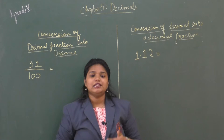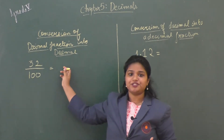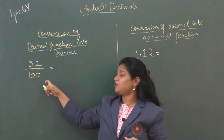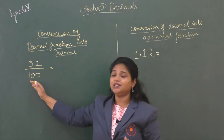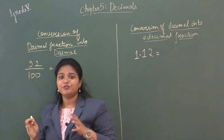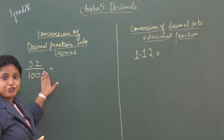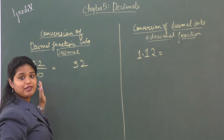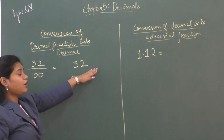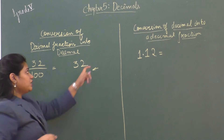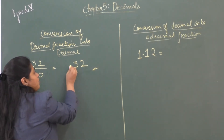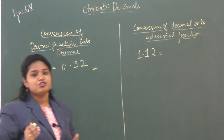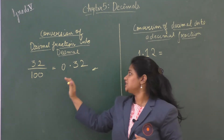Let's look at examples of conversion of a decimal fraction into a decimal number and vice versa. Here we have the decimal fraction 32/100. To convert it: consider the numerator 32, then count the zeros in the denominator — there are two zeros — so count two digits from the right (2, then 3) and place the decimal point just before 3. This gives 0.32. So the decimal number of 32/100 is 0.32.